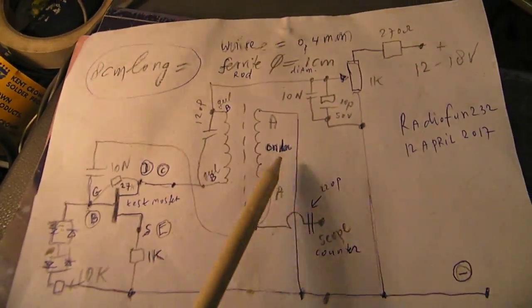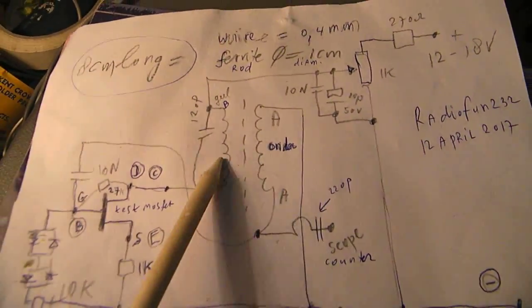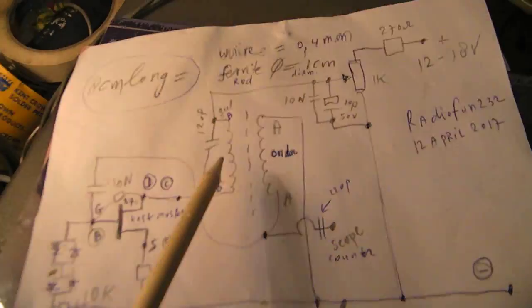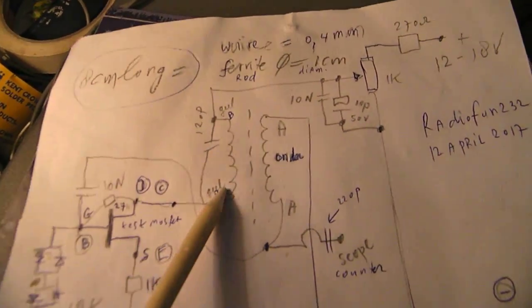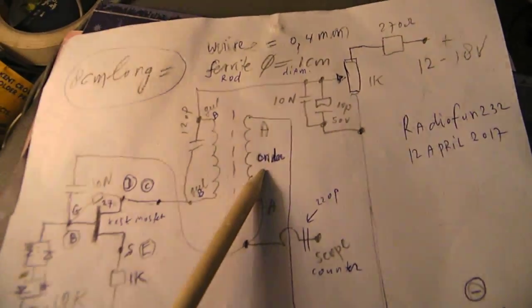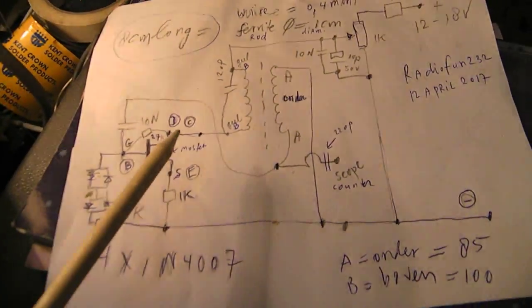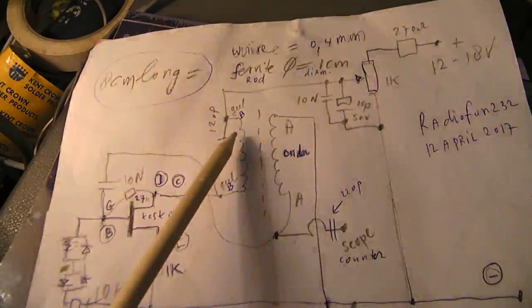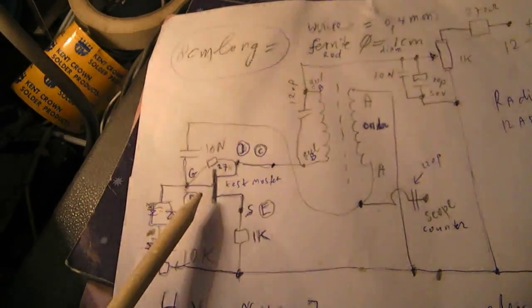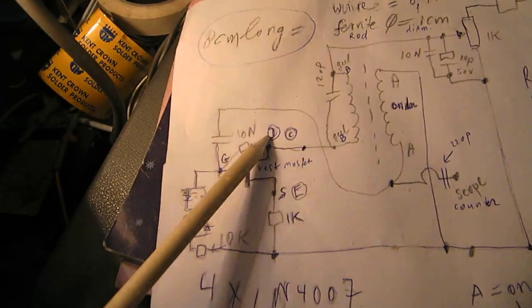I made a ferrite rod with windings here and windings there. The windings are not very critical. I've made here 85 turns and here 100 turns. The supply voltage is sent into that test circuit to the collector or to the drain.